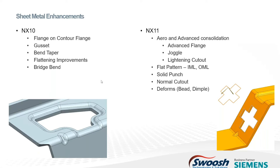Some of the big changes were really Siemens downgrading some of the tools and making them available to more people. The bridge bend used to be part of advanced sheet metal, but was brought down into standard sheet metal as part of NX10. Then in NX11, they took the aerospace tools and brought them down into the advanced sheet metal functions as well, trying to make them more available to most people.